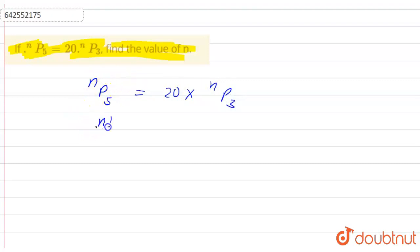then it will come N factorial divided by N minus 5 factorial is equal to 20 into N factorial divided by N minus 3 factorial. Now,